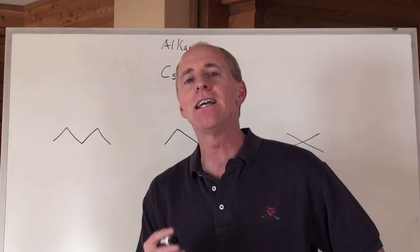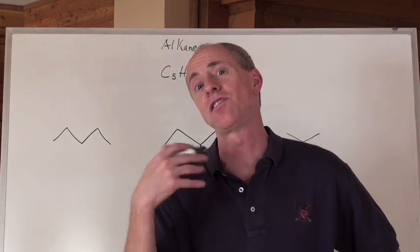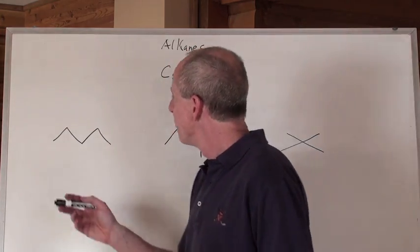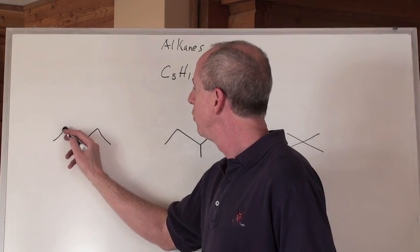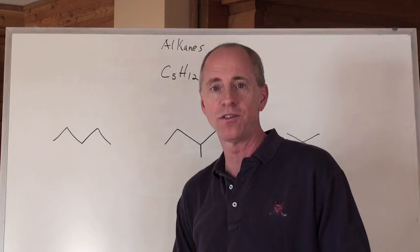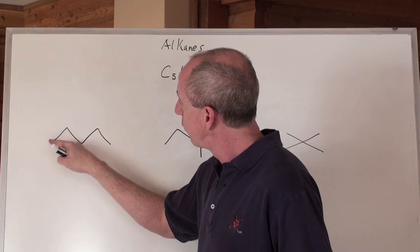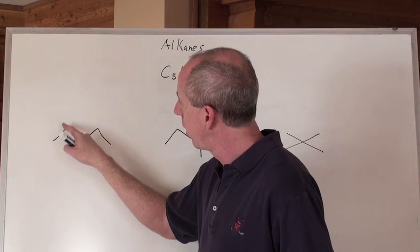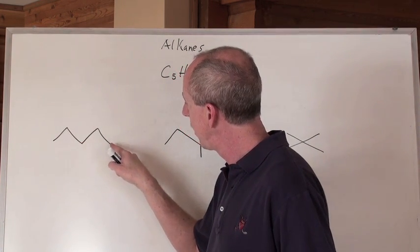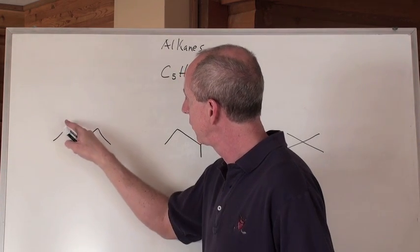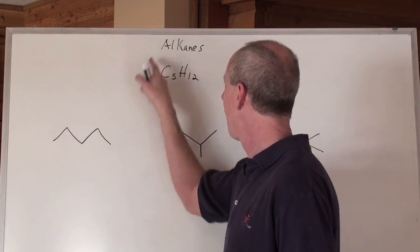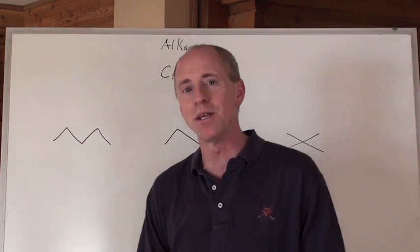If we do these line diagrams, these skeletal structures here, what you're going to get is one, two, three, four, five points there. And we've got three H's that are going to come off of that carbon, two here, two here, two here, and three here. Three and three is six, and two and two and two makes twelve. So C5H12 is going to be obeyed there.